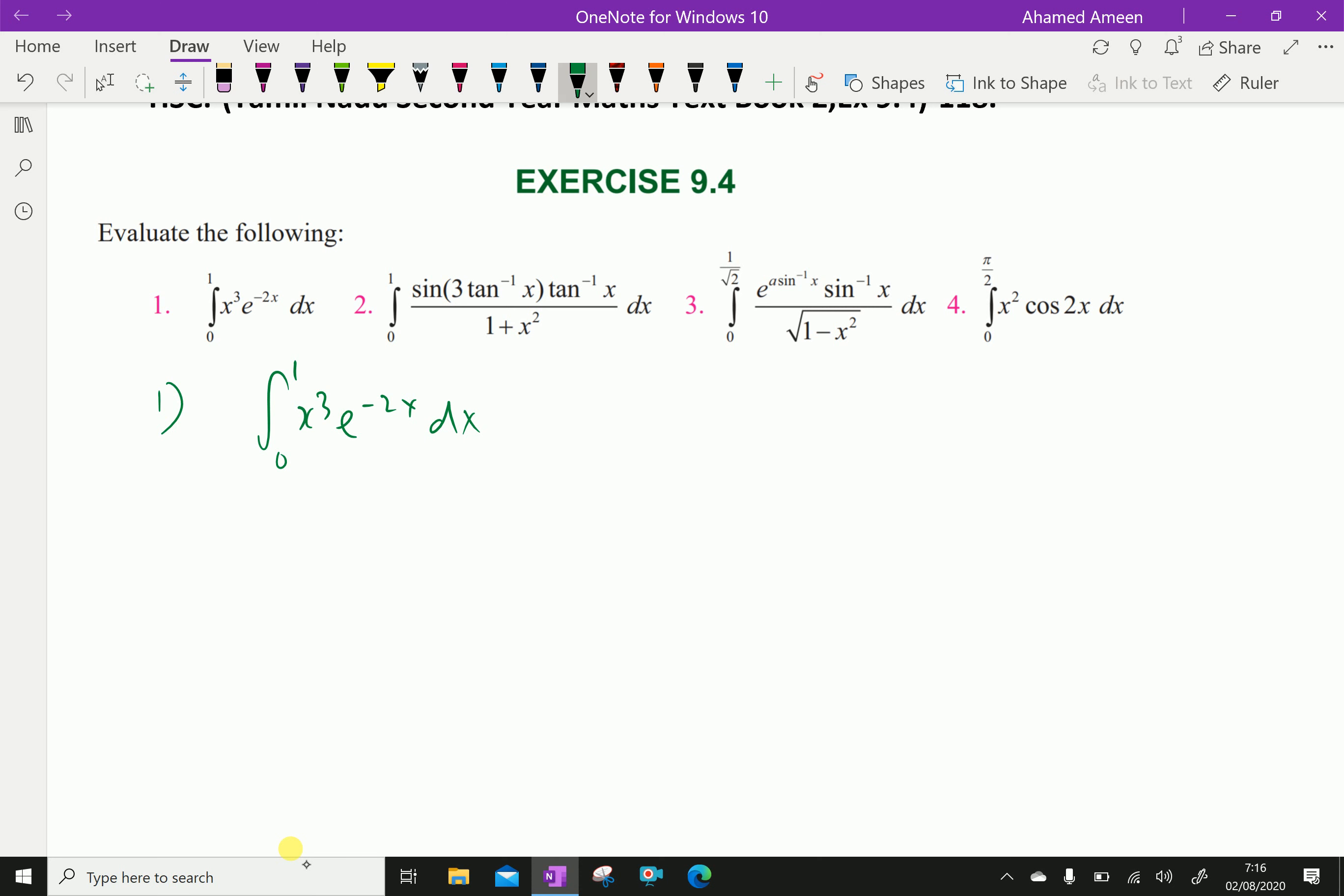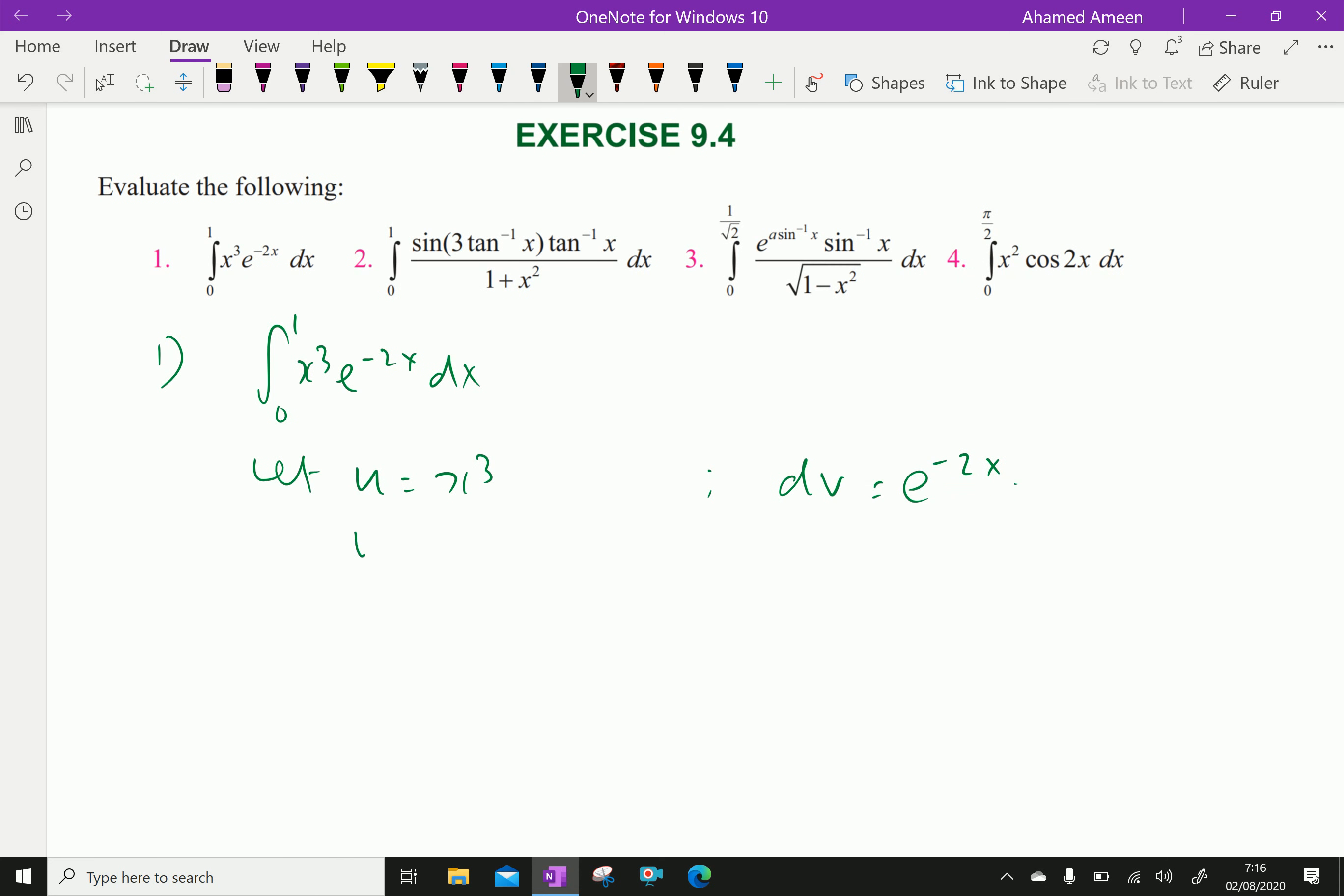Here, let u is x cube and dv equal e power minus 2x. Here, u dash, that is, differential of x cube is 3x square and integral of dv is v1. Integral of e power minus 2x is e power minus 2x over minus 2.